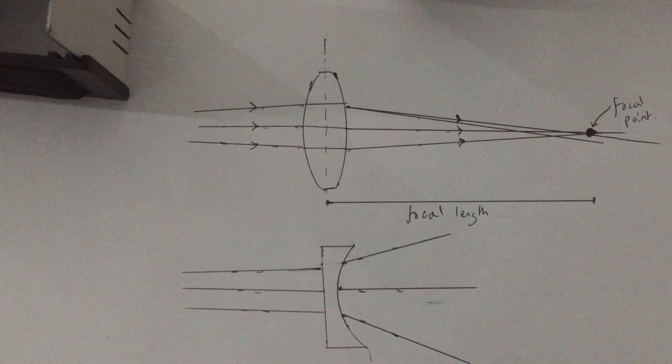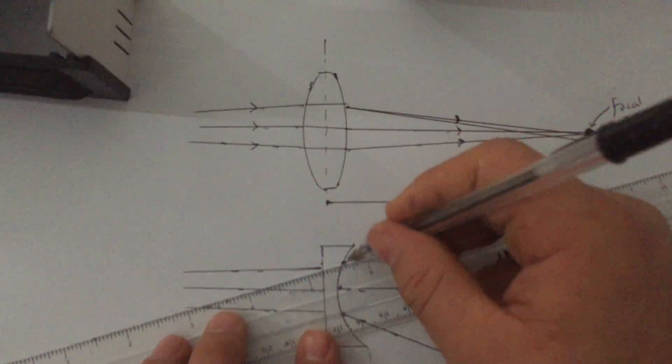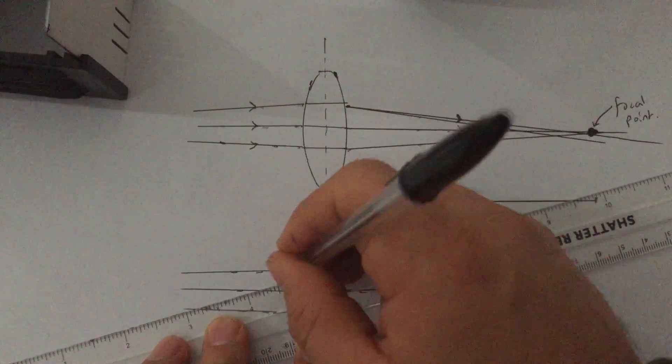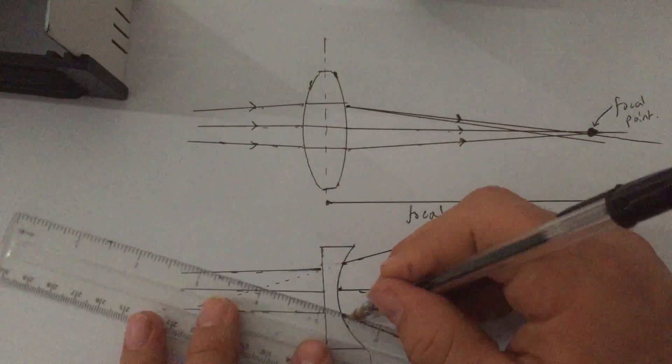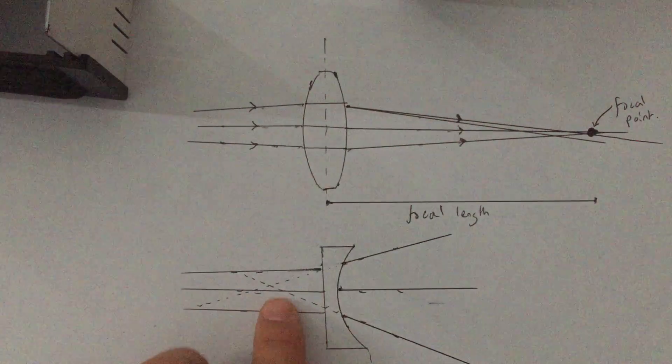It's quite often called a divergent lens, as opposed to a convergent lens. And if you extend these rays back, you will see that they do cross at a point.